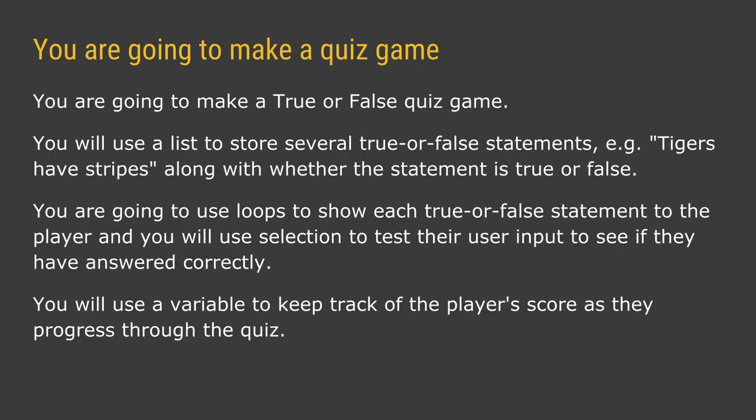So let's look at what we're actually going to be doing today. You are going to be making a true or false quiz game — a quiz where people might say true or false, tigers have stripes, and the user will enter true or false at the keyboard. We're going to use loops to show each of our statements to the player, and then use selection — if or else — to test whether that user input is correct, keeping track of their score using a variable.